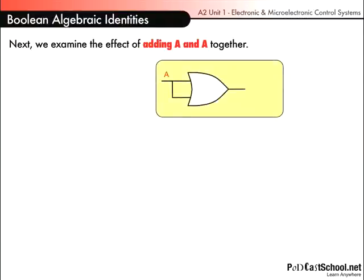Now, what happens if we add A and A together? Next, we examine the effect of adding A and A together. For this, I've used the OR gate from before. Remember, adding is OR gates. I've got an A at the input, and we're adding it to another A. We're ORing it with another A. So the simplest way to do that is just to connect the inputs. So what am I going to get at the output?